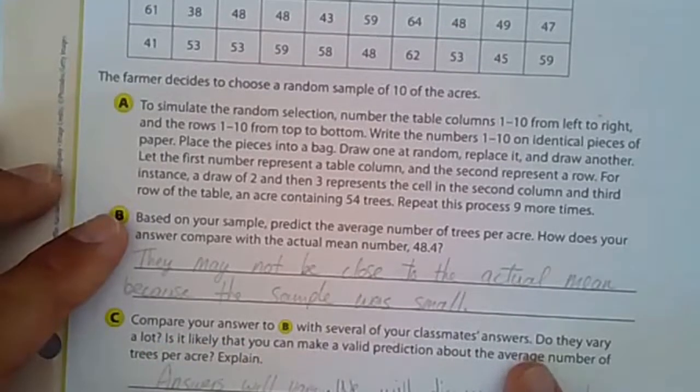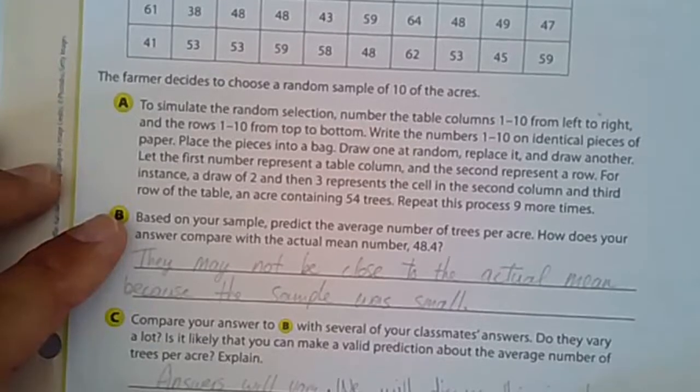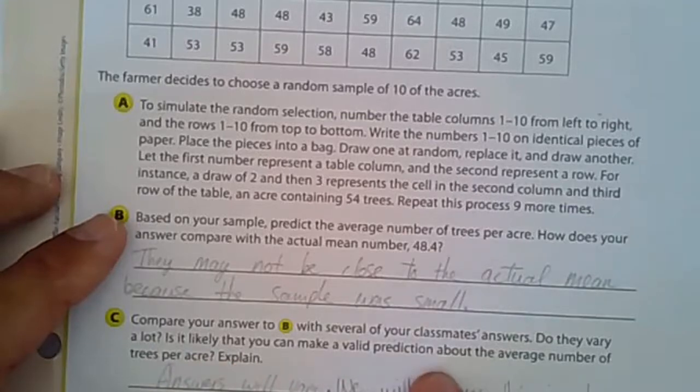Compare your answer to part B with several of your classmates. Well I didn't do that. Do they vary a lot? I think it might vary quite a bit. Is it likely you can make a valid prediction about the average number of trees per acre? Explain.